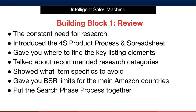I taught you about the constant need for research. I introduced the 4S product process and spreadsheet. I gave you the details of where to find the key listing elements and we talked about the recommended research categories. I showed what item specifics to avoid and they're also listed on your spreadsheet. I gave you your BSR limits for the main Amazon countries and we put together the search phase process together in a video.